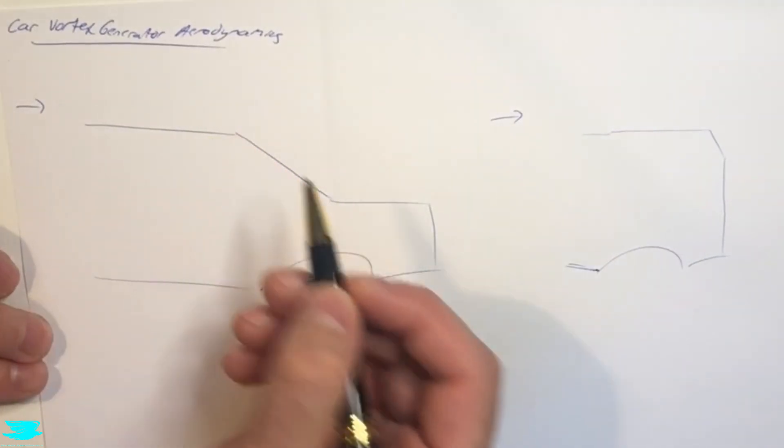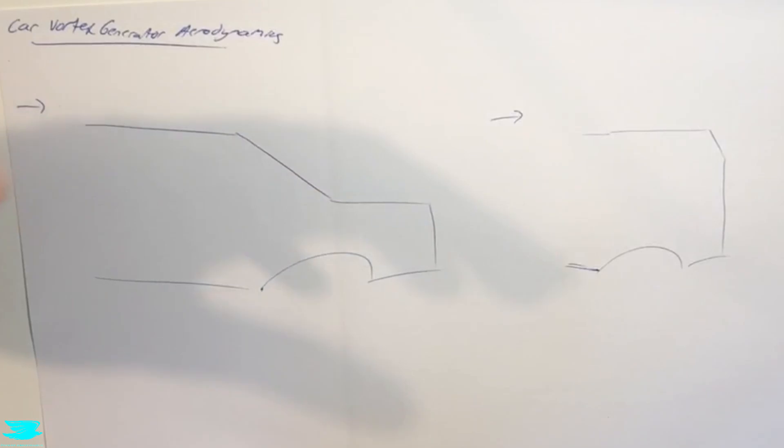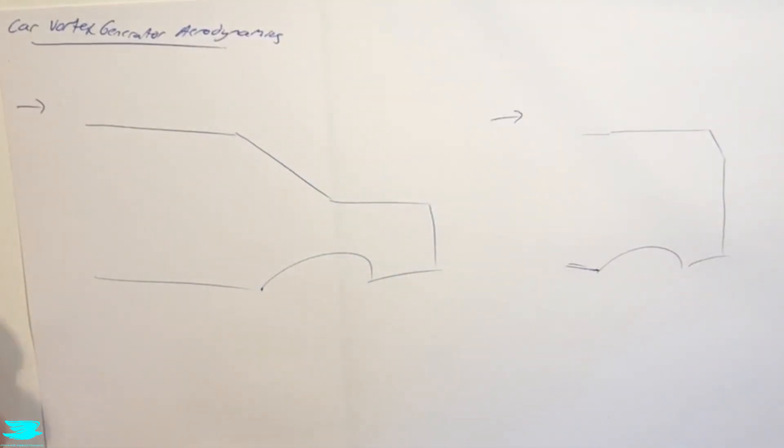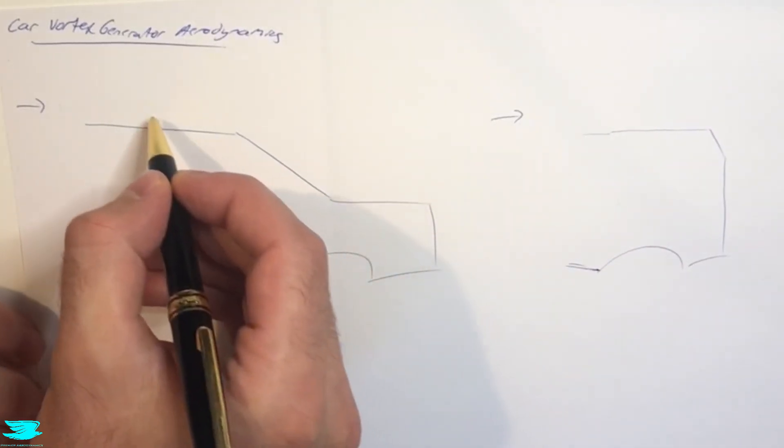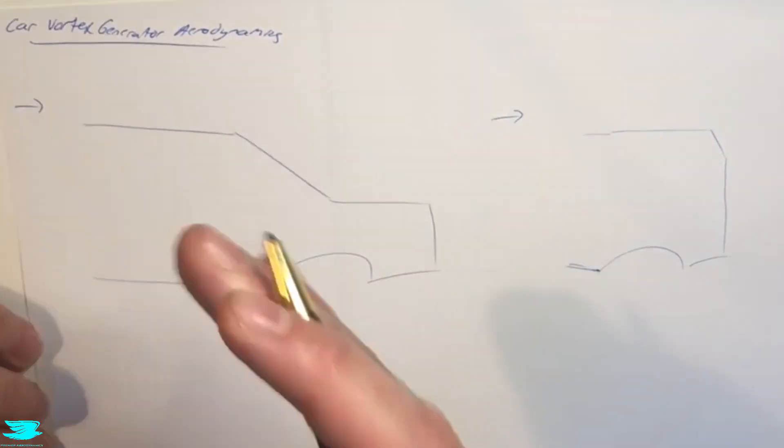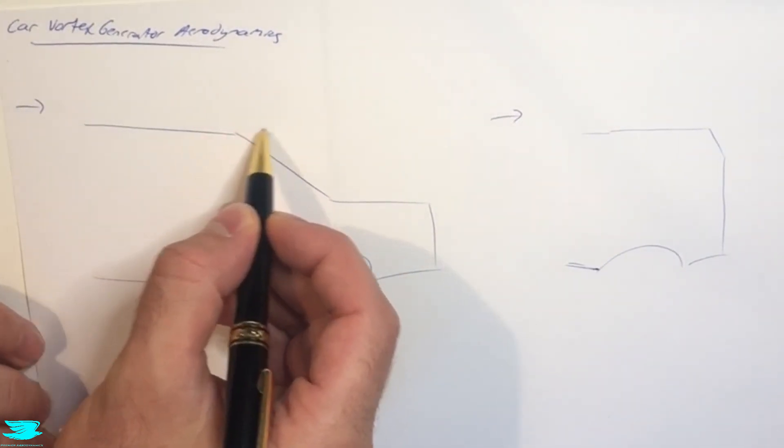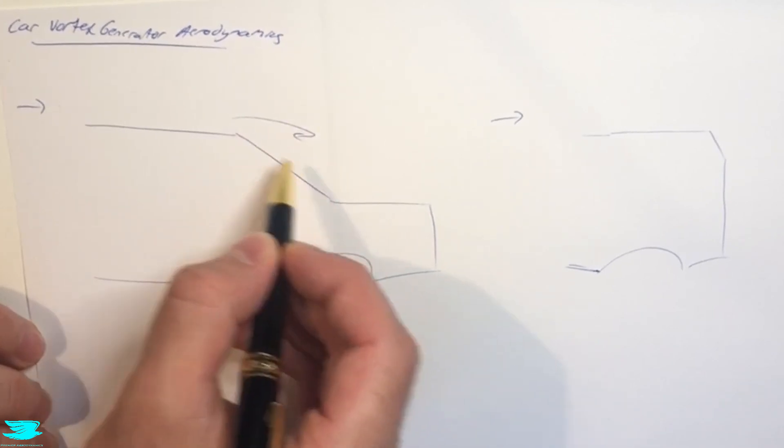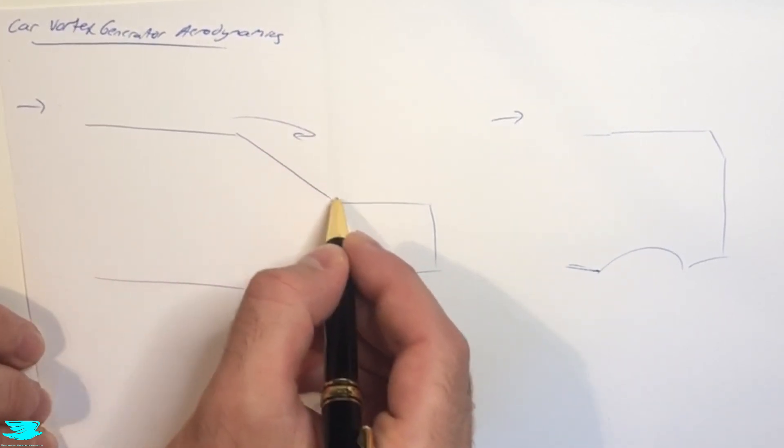We're going to be focusing mainly on this rear window, as I mentioned, that's where most vortex generators do get put. So why is that? Well, if this rear window is too steep compared to the roof, then the flow will come along and detach, so separate, and we'll get very low pressure on this surface here.